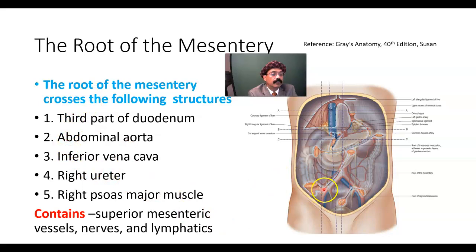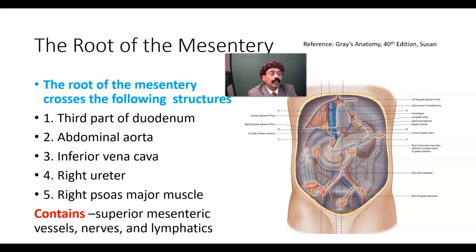The root of the mesentery extends from the duodenojejunal junction on the left at the level of lumbar vertebra 2, to the ileocolic junction at the level of the right sacroiliac joint.